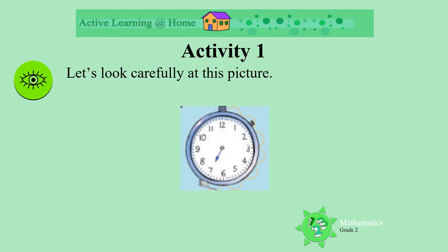The numbers say 1, 2, 3, 4, 5, 6, 7, 8, 9, 10, 11 and 12. We also see only one hand on this clock. This hand is the hour hand. It shows us the hour.